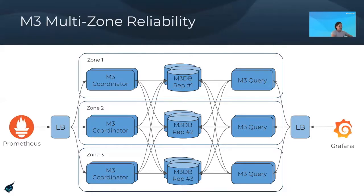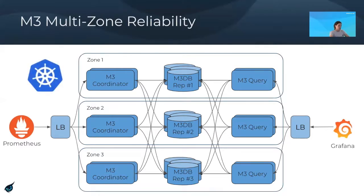To help with the management of this multi-zone setup, the M3DB tier is the hardest part in terms of scaling and management because it is a stateful tier. To address this, there is a Kubernetes operator available in open source. If you want to run M3 on Kubernetes, you simply tell it the number of instances you want in the cluster, and the operator takes care of scaling everything up and down for you.